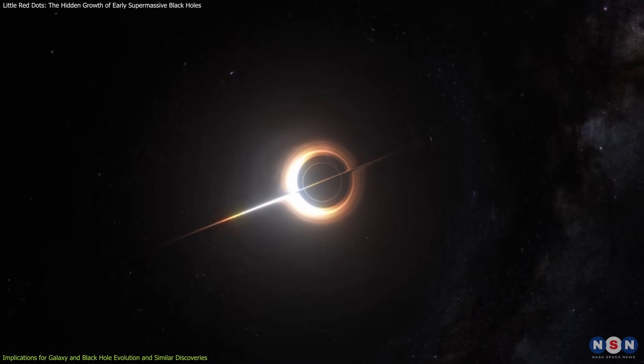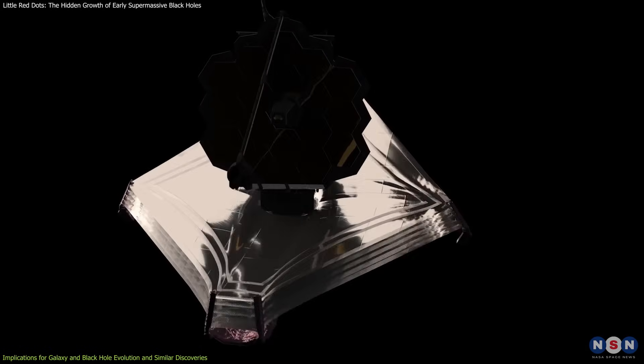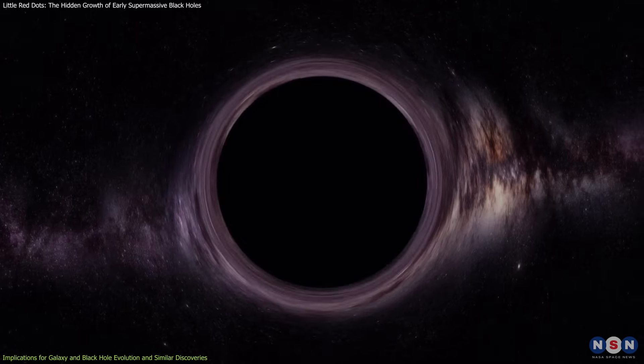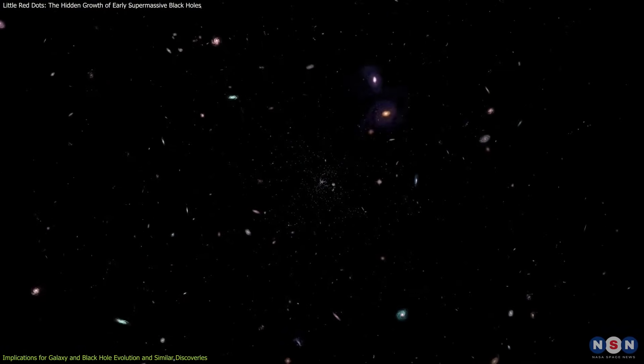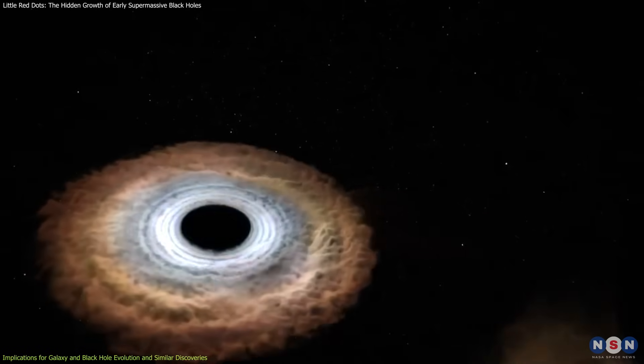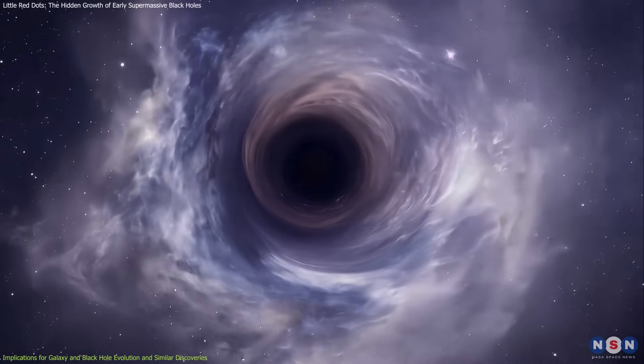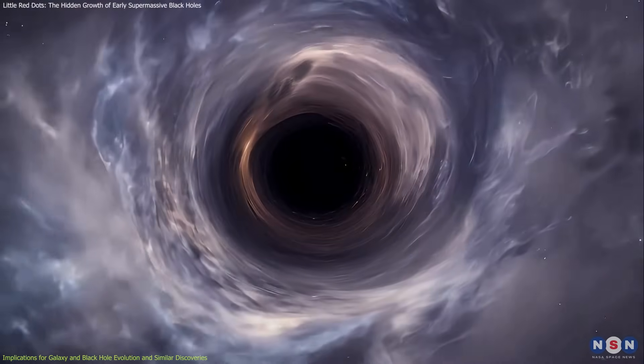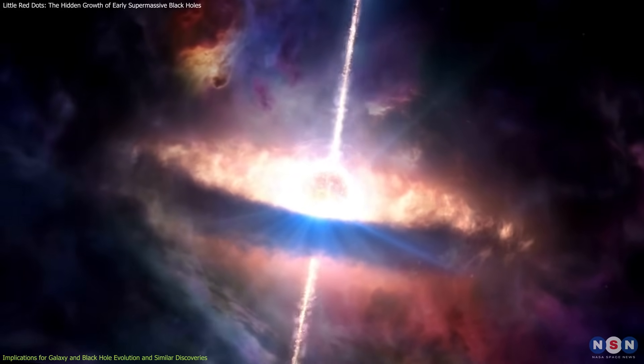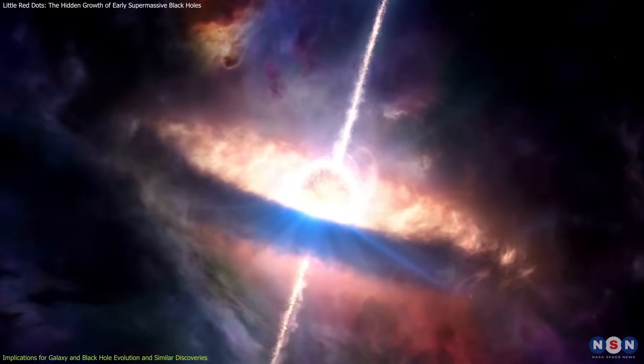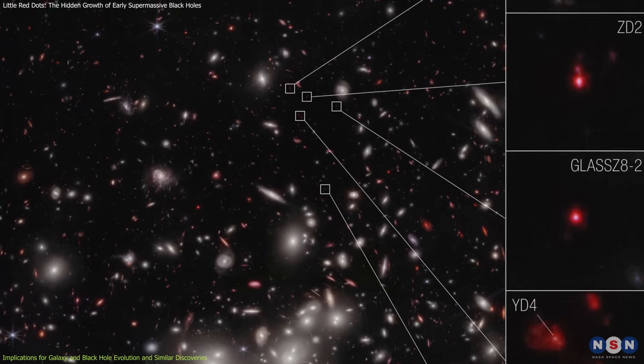This discovery also aligns with other recent findings about early black holes. Webb's deep field observations have revealed unexpectedly massive black holes in galaxies that formed just a few hundred million years after the Big Bang. These observations suggest that some black holes could have reached supermassive sizes extremely quickly, requiring new explanations for how they accumulated so much mass in such a short time. Additionally, astronomers have identified other obscured AGNs, supermassive black holes hidden behind thick clouds of gas, similar to what has been proposed for LRDs.